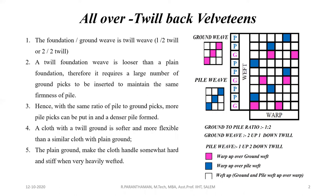Hence, with the same ratio of pile to ground picks, more pile picks can be put in and a denser pile formed. A cloth with a twill ground is softer and more flexible than a similar cloth with plain ground. The plain ground makes the cloth handle somewhat hard and stiff when very heavily wefted. The twill foundation is looser than the plain because the cover factor of plain weave is higher than the twill. That is the main reason.